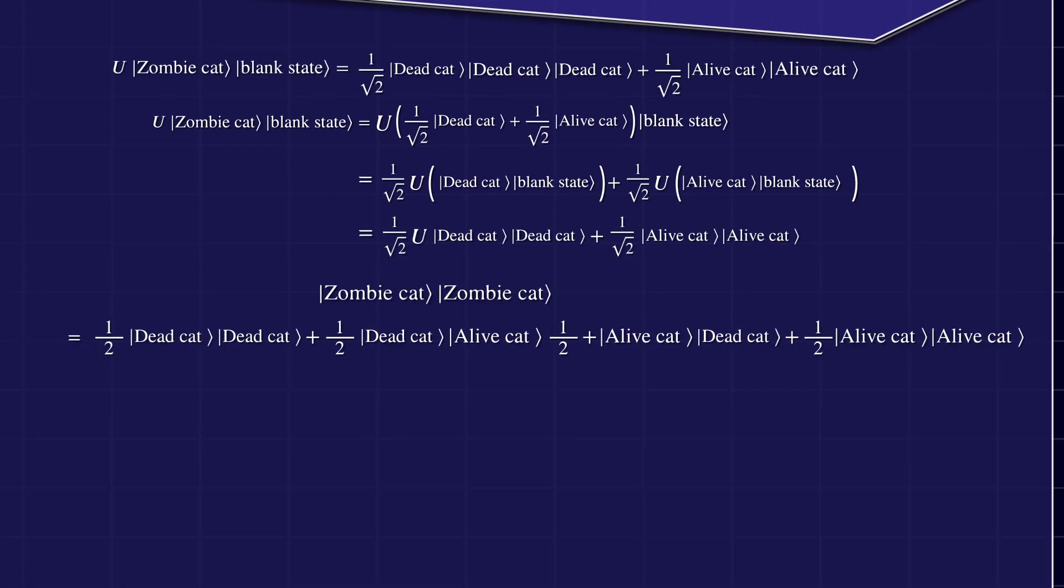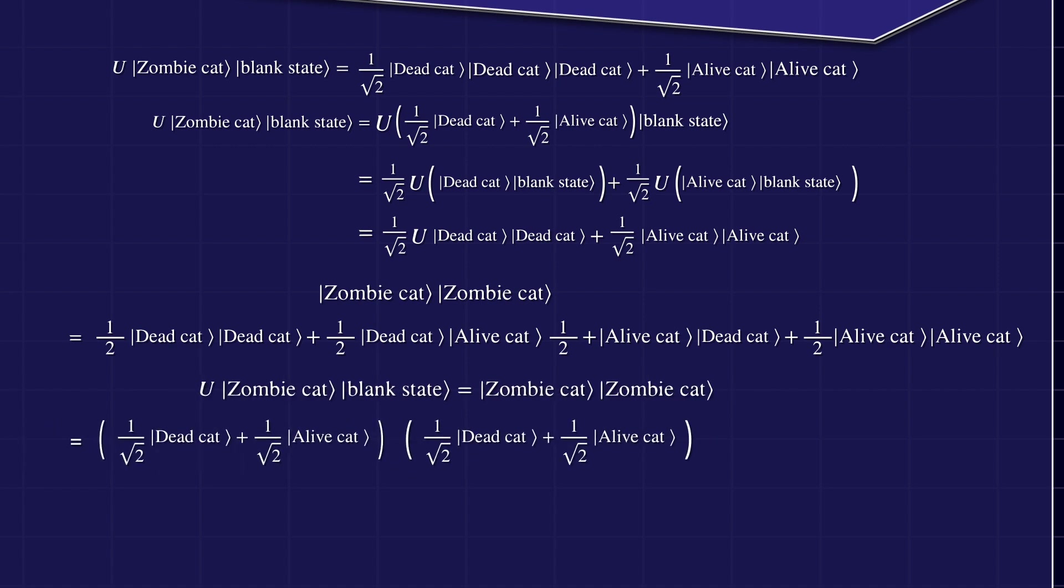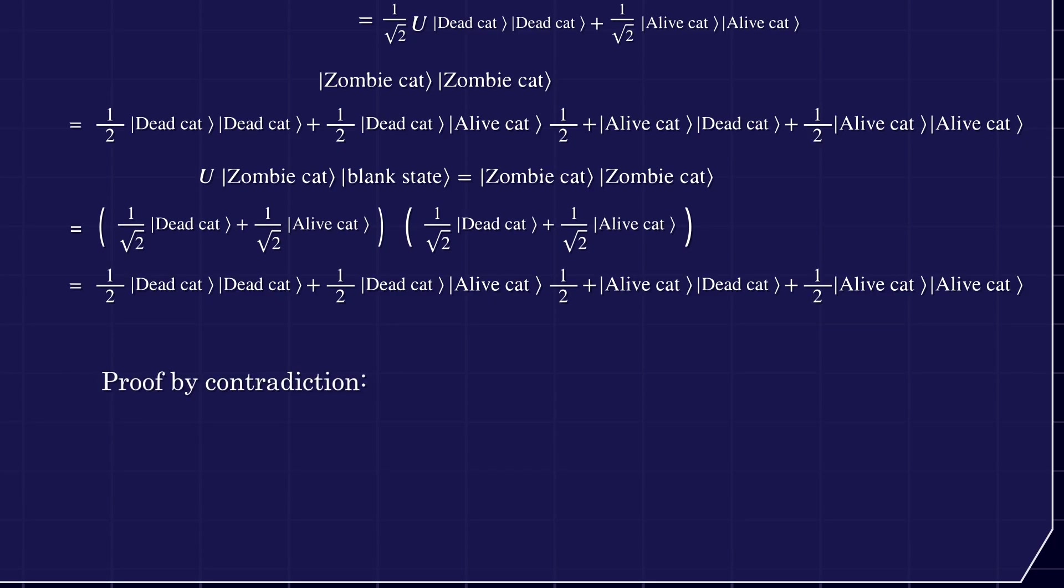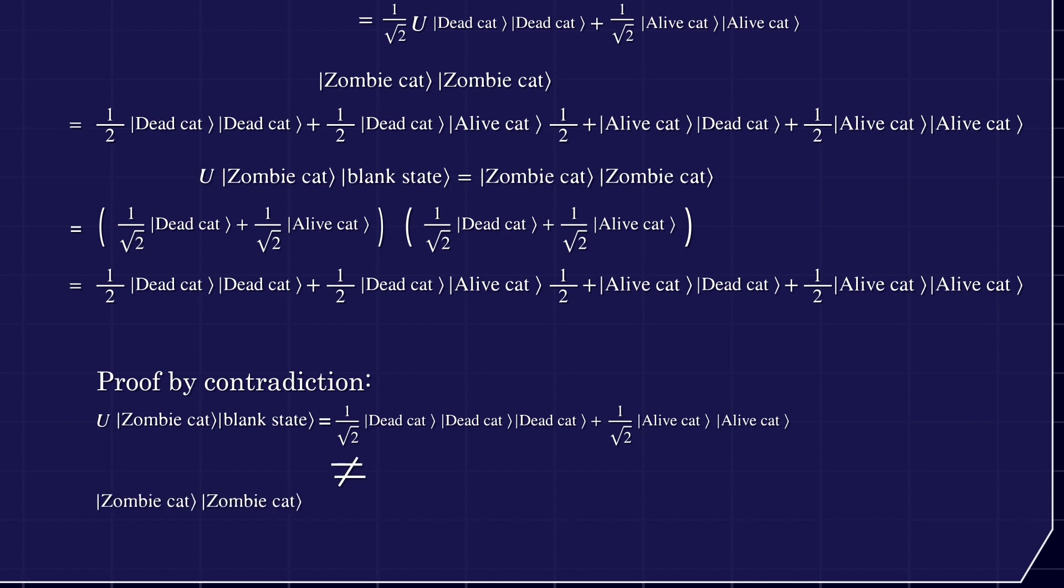But this is in contradiction to what we expect out of the cloning machine. If it was a true cloning machine, then there would be a 25% probability that one cat is dead and the other cat is alive. These extra cross-terms of a dead cat and an alive cat destroy the perfect cloning. This concludes our little proof of the no-cloning theorem.